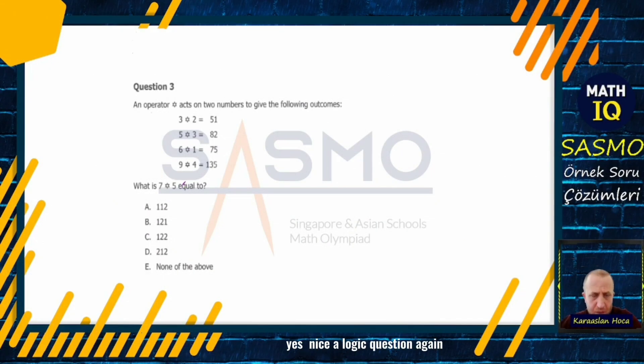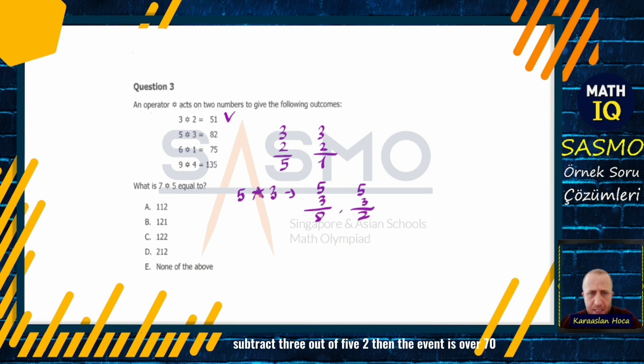Yes, nice, a logic question again. 51 found that 2 transactions were made with 3. From 5 to 3, 82. From 1 to 7, 5. 9 from 4 to 135. We can think like this: if we add 3 to 2, we get 5. If we subtract 2 from 3, we get 1. Look, 51 or 50. Let's look at 3 now: 53. So what happened to 53? Is it the same logic? Collect 3 and 5 equals to 8. Subtract 3 out of 5, 2, then the event is over, 70.